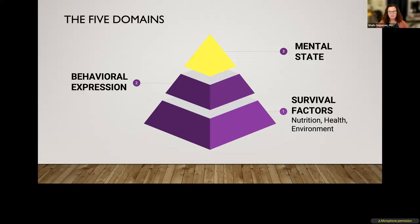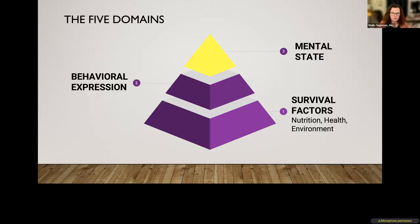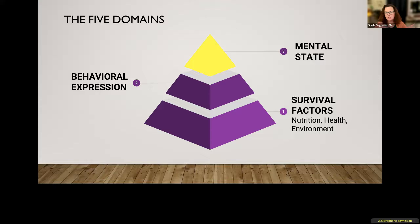Our Five Domains start with survival factors of nutrition, health, and environment — we'll go into this in more detail — and then behavioral factors. Those four areas then produce our mental state and our psychological well-being.